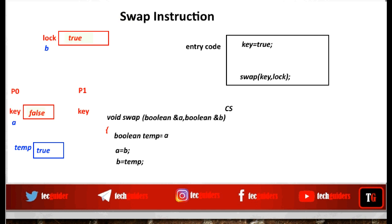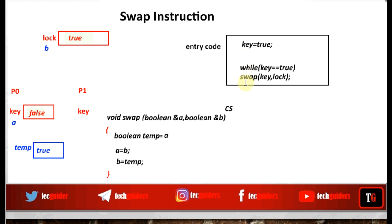Now process P0 can enter inside the critical section. While P0 is inside the critical section, suppose P1 tries to execute the swap function with key set to true. As a result of the swap function, key will receive a true value from lock and transfer a true value to lock. So when key receives a true value, it means the critical section is occupied. As long as key equals true, the process will never enter the critical section — it will keep waiting in the while loop, executing the swap function.